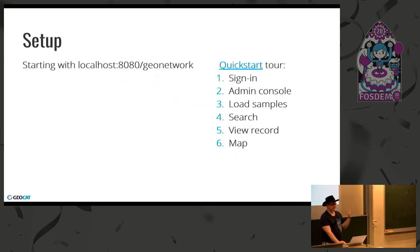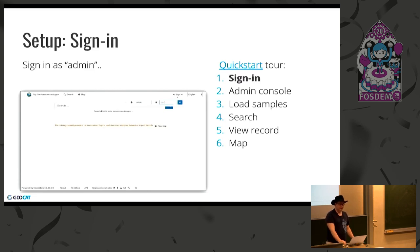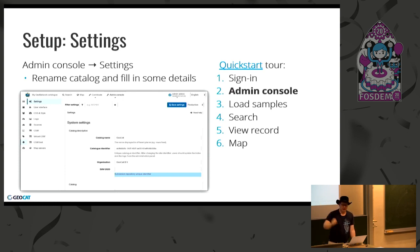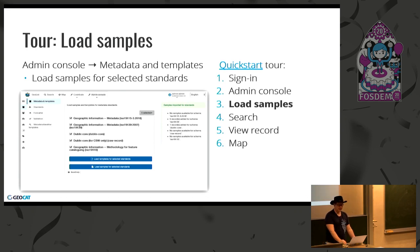In terms of setup, starting with one of these localhost things, we're presented with a nice blank screen. We sign in using admin and admin, and then we can start to get into the administration console. I went through and changed the title and description — so this would be my catalog — and they've got a little example where we can load in some sample data. That's enough to actually begin trying it out.